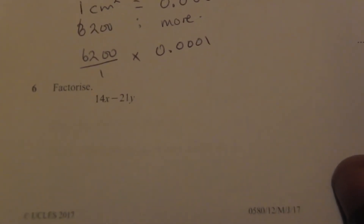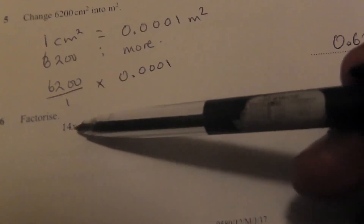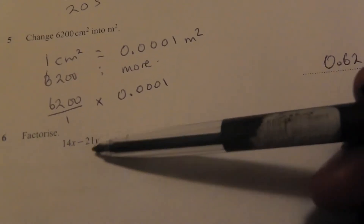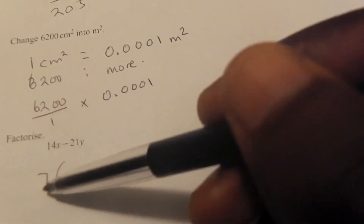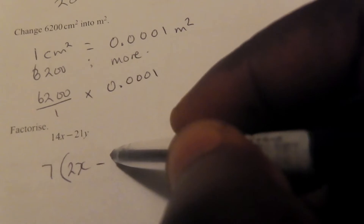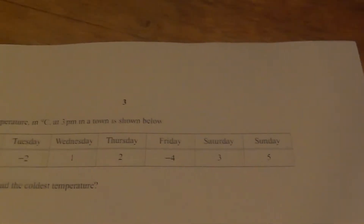The next one says: factorise 14x minus 21y. We look for the common factor of the two terms. There are no common letter factors, but for the numbers: 14 and 21 share a common factor of 7. So we write 7, open brackets, and then 7 into 14x gives 2x, minus 7 into 21y gives 3y. The final answer is 7(2x − 3y).